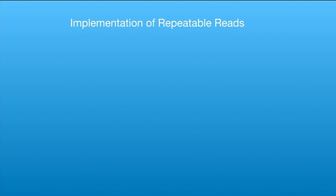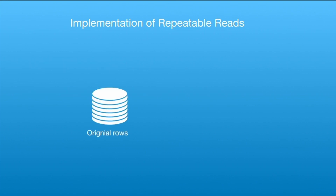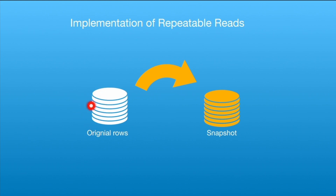The internal implementation of repeatable reads uses two things. First, it acquires a write lock on rows that are going to be updated, to prevent other transactions from changing those values during the transaction. Second, it uses MVCC — multi-version concurrency control. When a transaction starts, the database creates a snapshot copy of the rows involved. All read and write operations are performed only on this snapshot. Write locks are placed on rows during write operations to avoid dirty writes by other transactions.